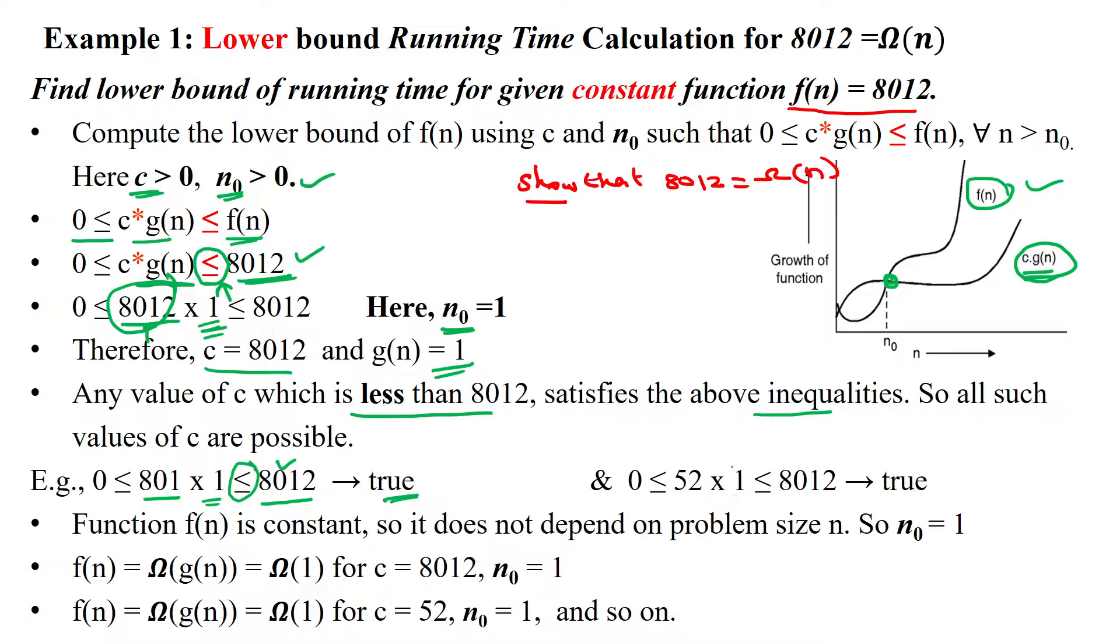When you are taking lesser number 52, it's also satisfying the given inequality as true. So from this, what we can derive: when f(n) is constant, it is not depending on the input size. So we can take n equal to 1.